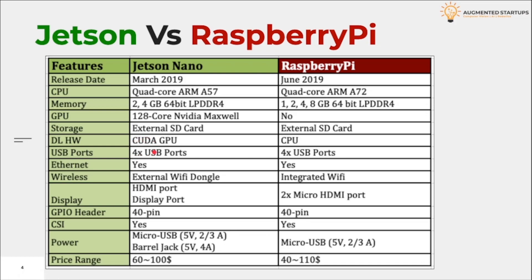Both devices contain 4 USB ports that can use USB Type B to connect 4 peripherals simultaneously. Both also contain Ethernet ports for internet access. However, the Jetson does not have any WiFi module, whereas the Raspberry Pi has a built-in wireless card. In that case we can either use a WiFi dongle or connect an external WiFi module under the heatsink. Both devices have an HDMI port for display to an external monitor, and the Jetson has an additional display port for hooking up an additional display.